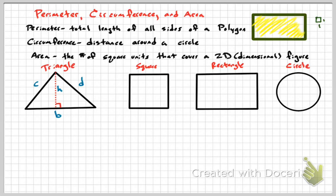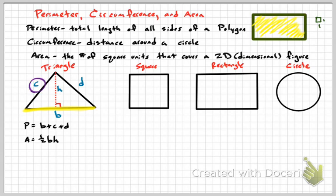For a triangle, the height is the perpendicular distance from the base to the opposite vertex — it must form a right angle. The perimeter is found by adding all three sides together. The area of a triangle is one-half times base times height. Later we'll use the Pythagorean theorem to find side lengths when they're not given.